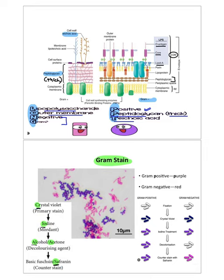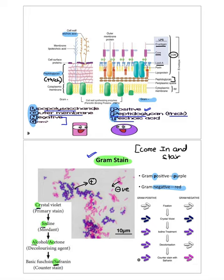Now moving to stains in microbiology. The first and most important stain is the Gram stain. Gram positive appears purple and gram negative appears red or pink. To remember the sequence, use 'CIAS': C for crystal violet, I for iodine, A for alcohol or acetone, and S for safranine — the counterstain.